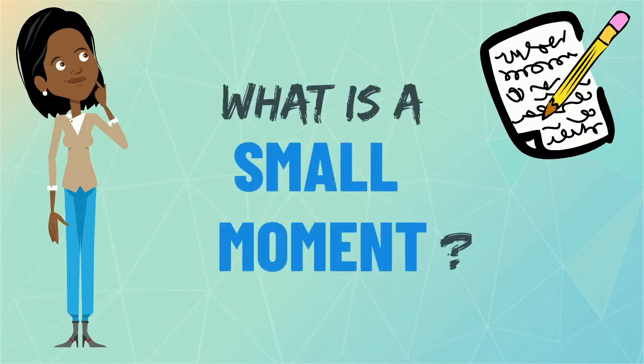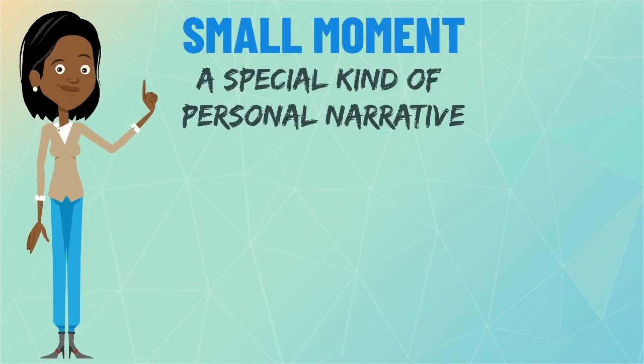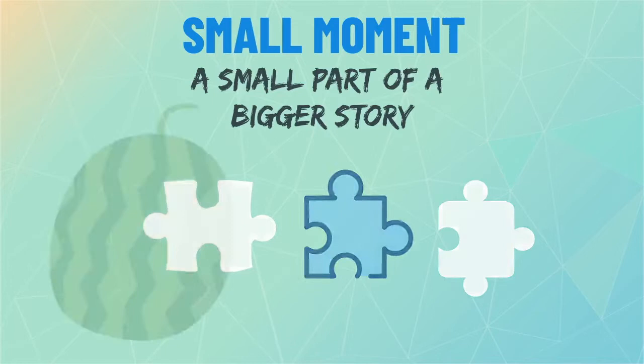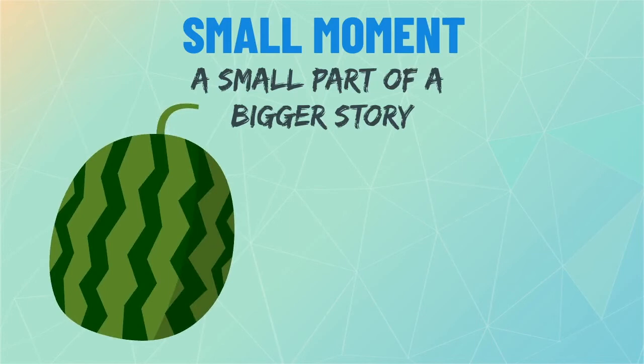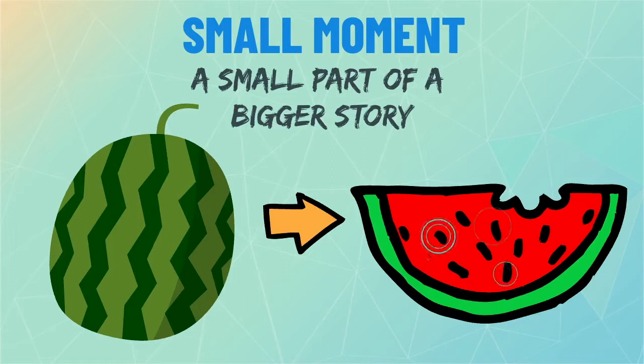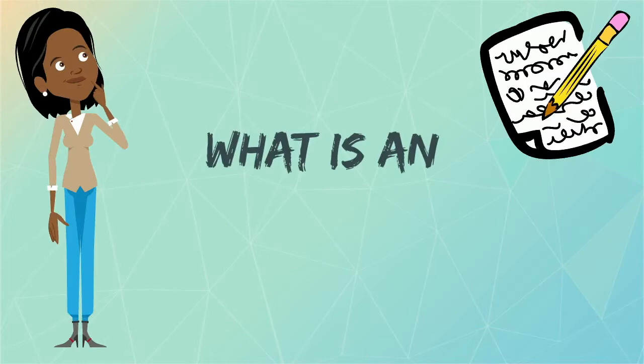What is a small moment? A small moment is a special kind of personal narrative. It is a small part of a bigger story. A good way to remember it is by thinking of a watermelon. A watermelon is a really big fruit, so you can think of it as the big moment. Each watermelon has lots of tiny seeds, and the seeds are the small moments.